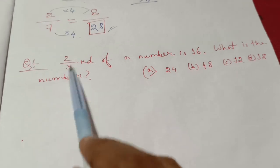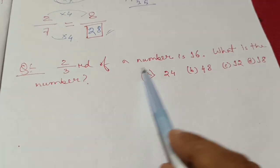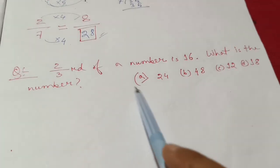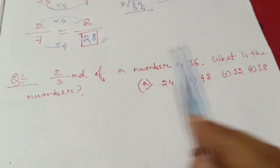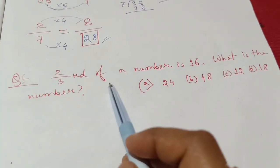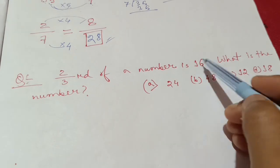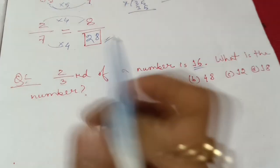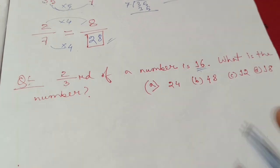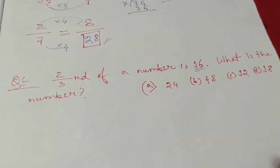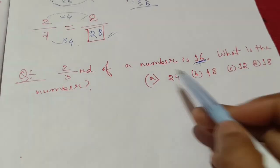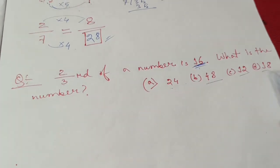This is the question: two-thirds of a number is 16. What is the number? The number is 24, 48, 12, or 18.